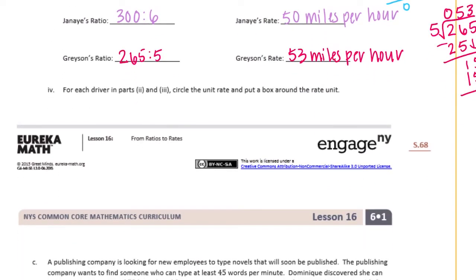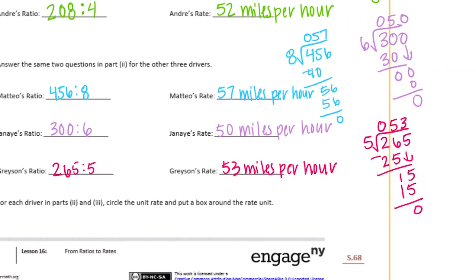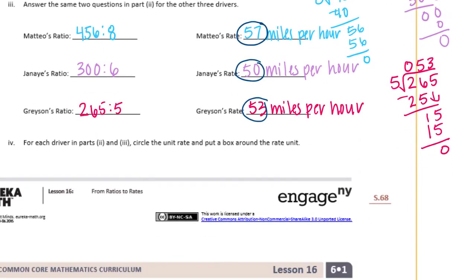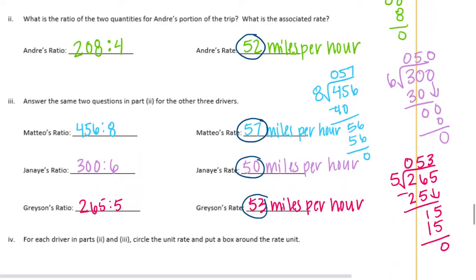Number 4. For each driver in parts 2 and 3, circle the unit rate and put a box around the rate unit. Okay, so we need to circle the unit rate, which is the number of miles. So there's the unit rate there, 57, 50, 53. So there's the unit rate. And put a box around the rate unit. So the rate unit is just miles per hour. Basically a description of what the number means.